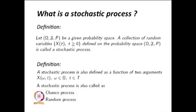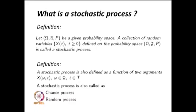Similarly, if you make different random variables for different t, where all the tᵢ's belong to capital T, then a collection of random variables for different values of t is called a stochastic process. The answer to whether more than one stochastic process can be created from a given probability space is yes — for a different collection capital T, you can have a different stochastic process. More than one stochastic process can be created from one probability space.